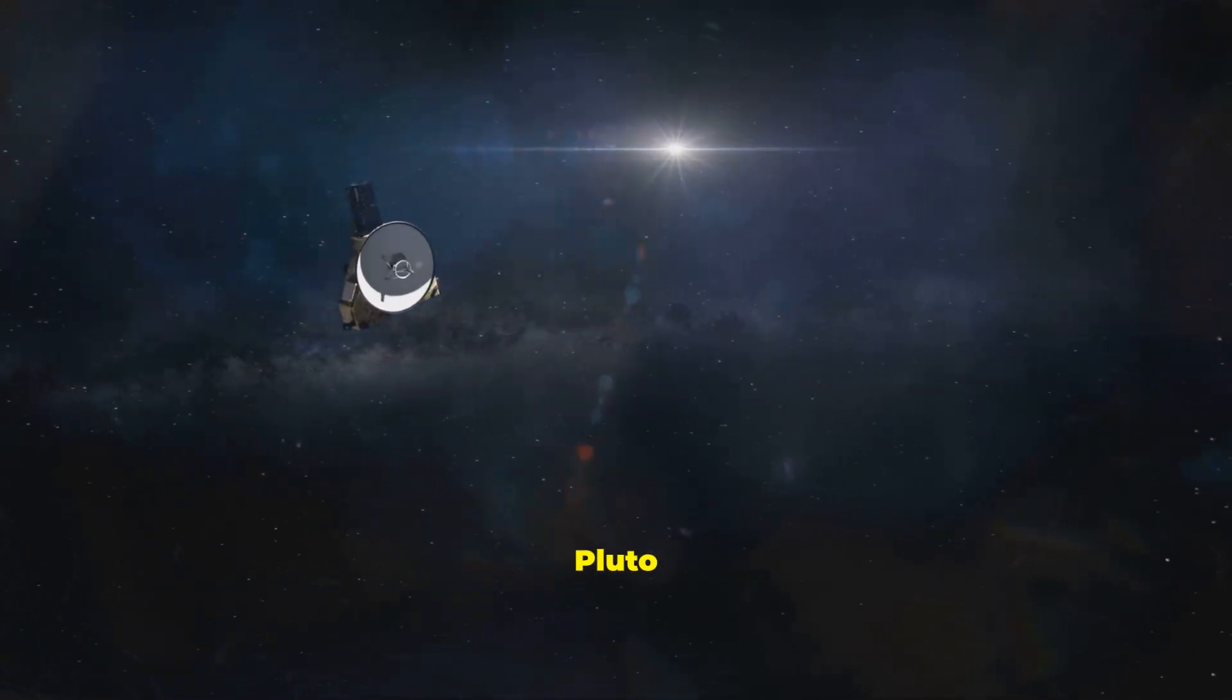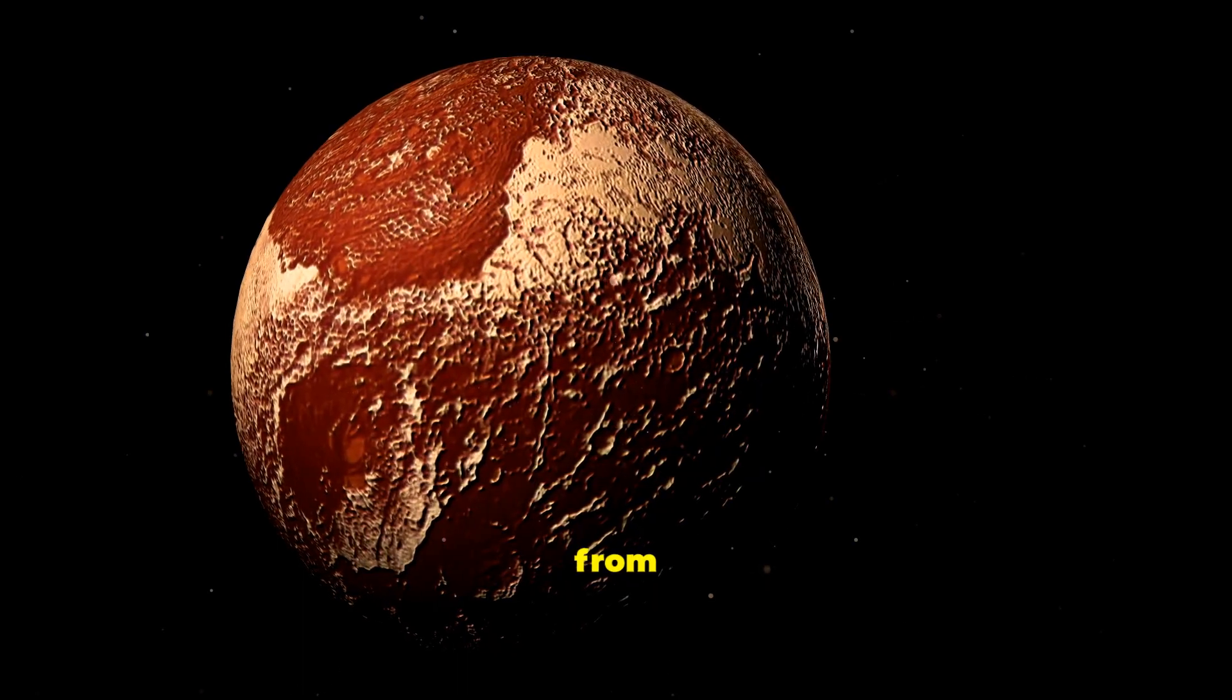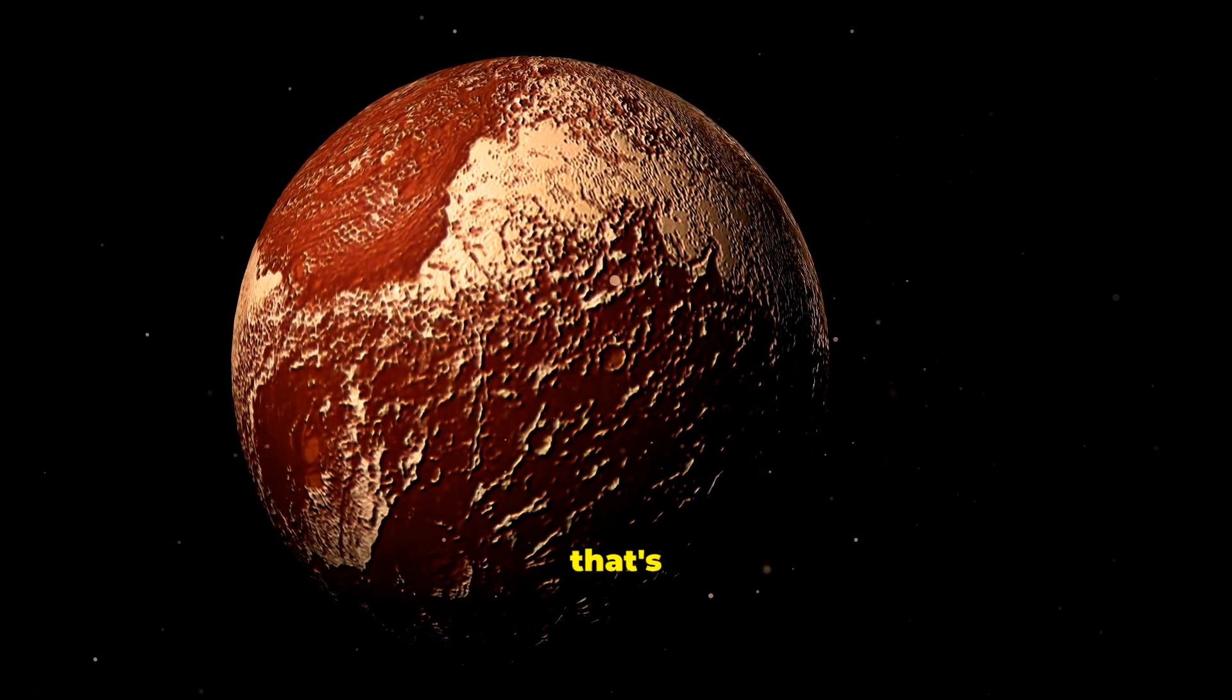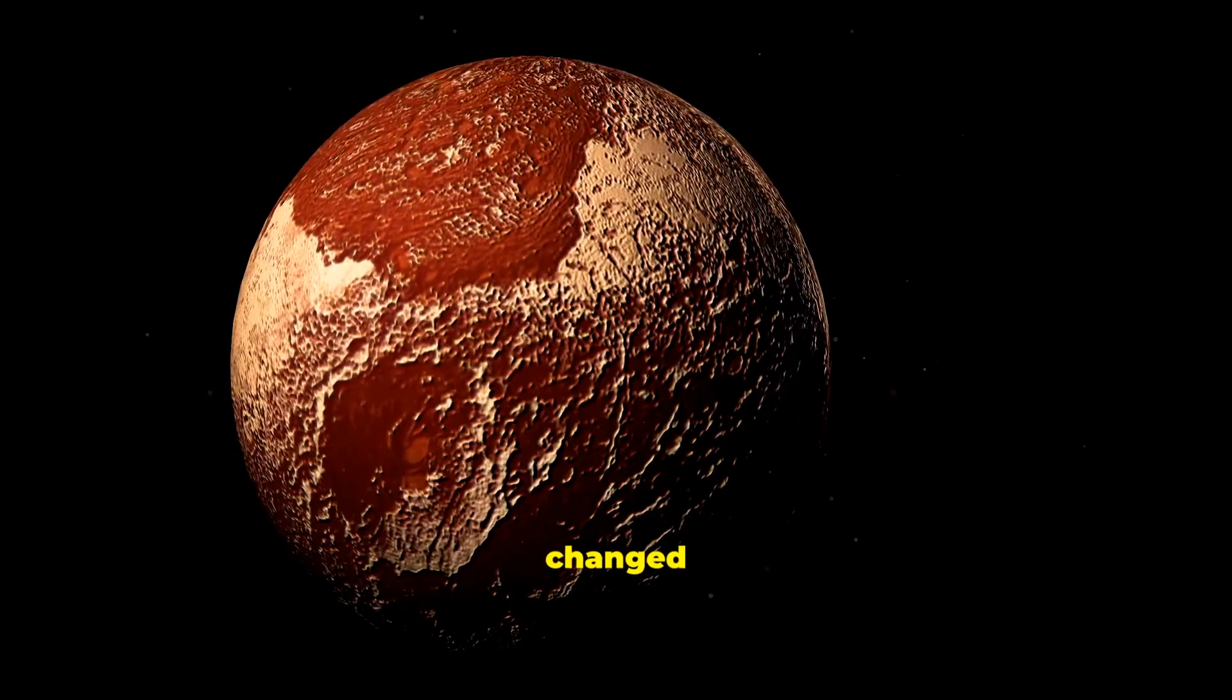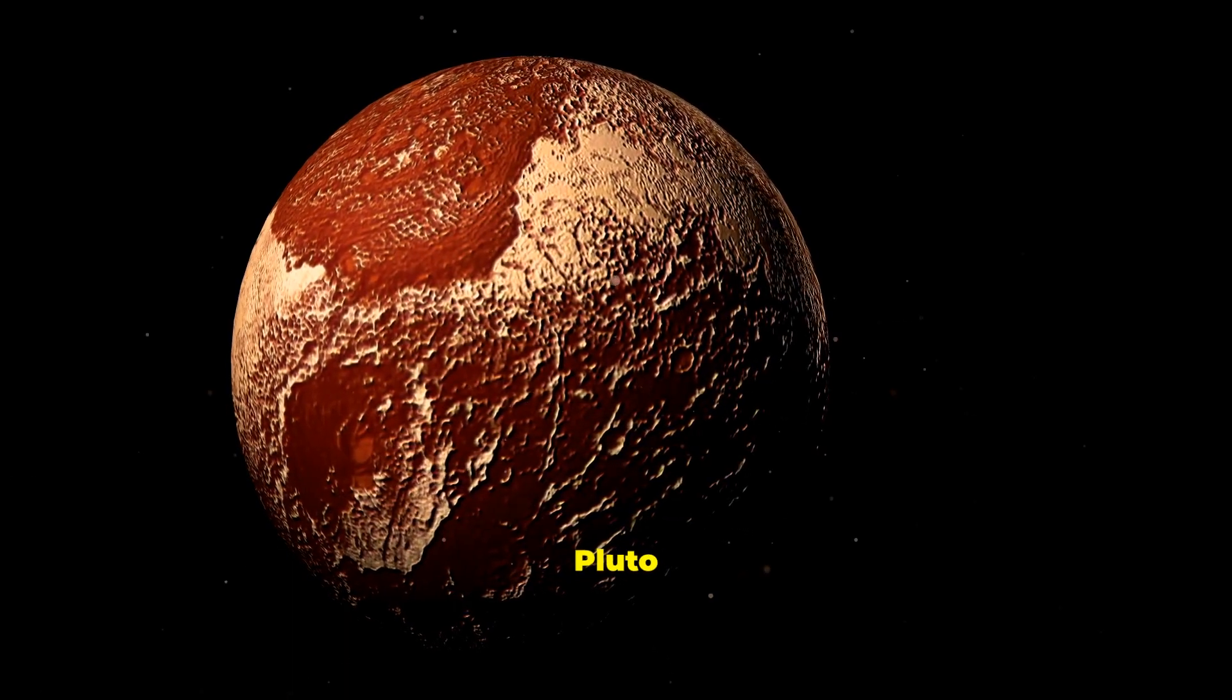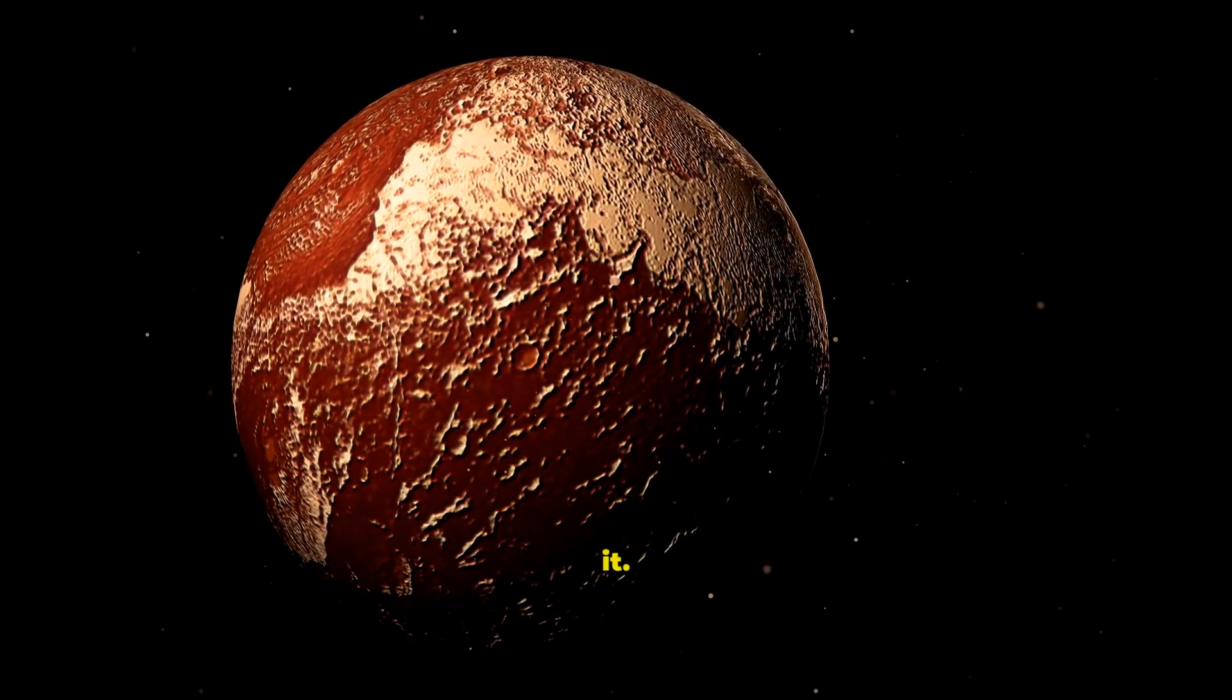What NASA Found on Pluto. This is Pluto, the ninth planet from the Sun, or at least that's what they told us in school. But then in 2006, they changed their mind and decided that Pluto wasn't actually a planet anymore, and we should all just forget about it.